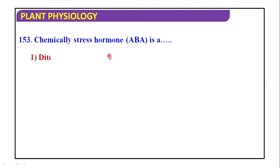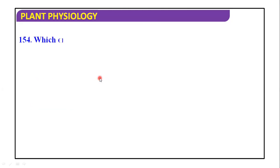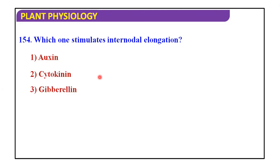Chemically stress hormone ABA is a diterpenoid compound, terpenoid compound, adenine-substituted compound and amino acid. And the answer is terpenoid compound. Which one stimulates inter-nodal elongation? Auxin, cytokinin, gibberellin or phenol? The answer is gibberellin.